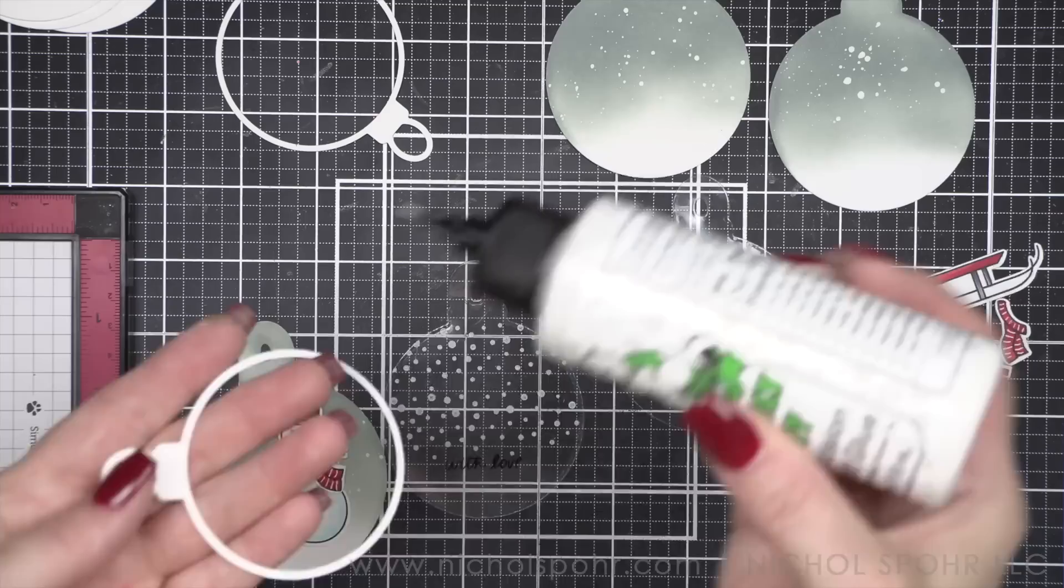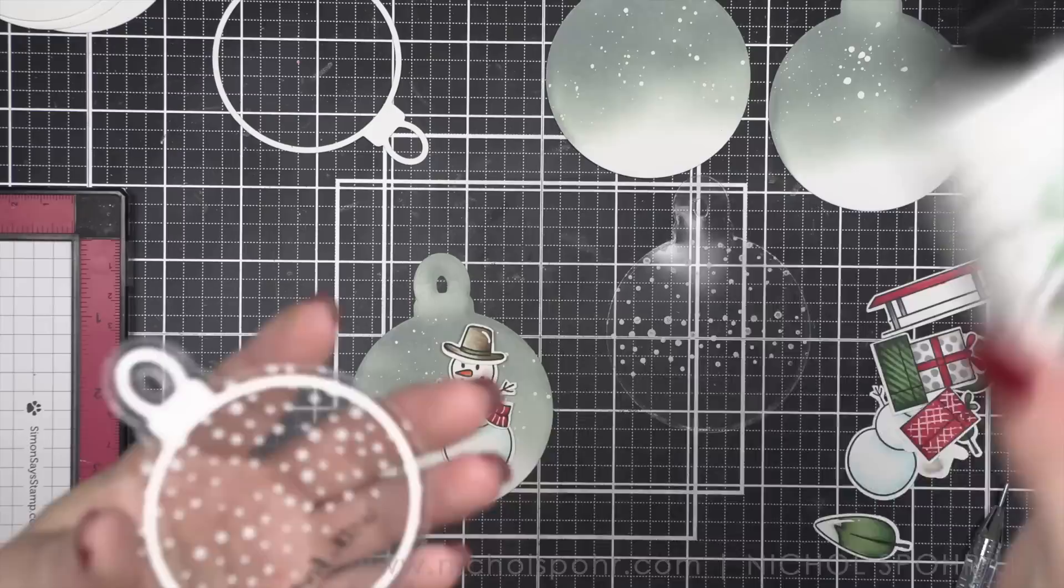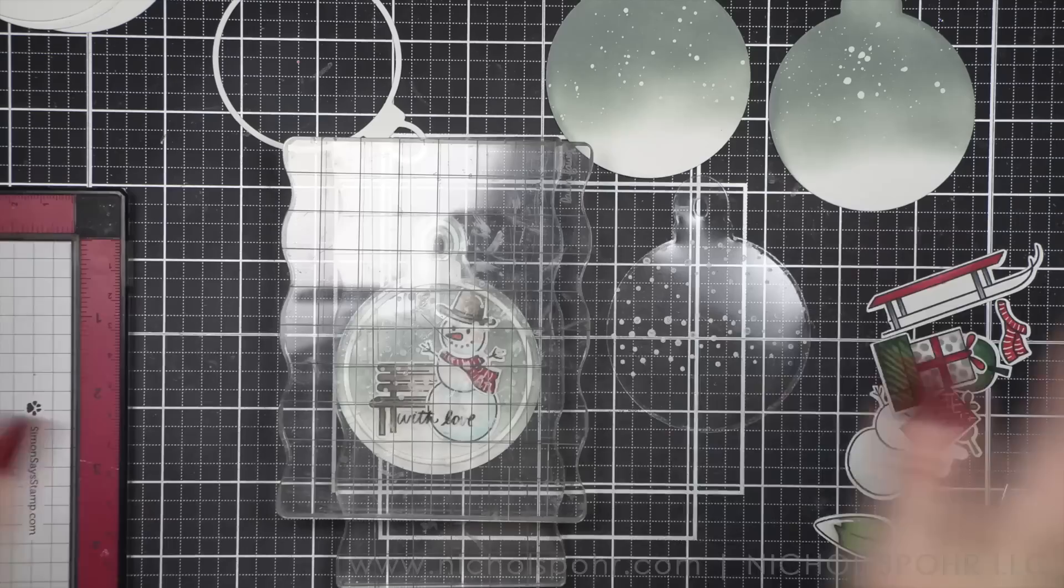So I think it looks cute right there. I'm going to go ahead and remove everything else and keep the acetate in my MISTI. Stamp the With Love with black Stazon ink, and then we're going to glue that little skinny white frame to the front of our acetate. This is also going to hide the adhesive. I'm going to use acrylic blocks a ton here to help hold everything nice and flat.